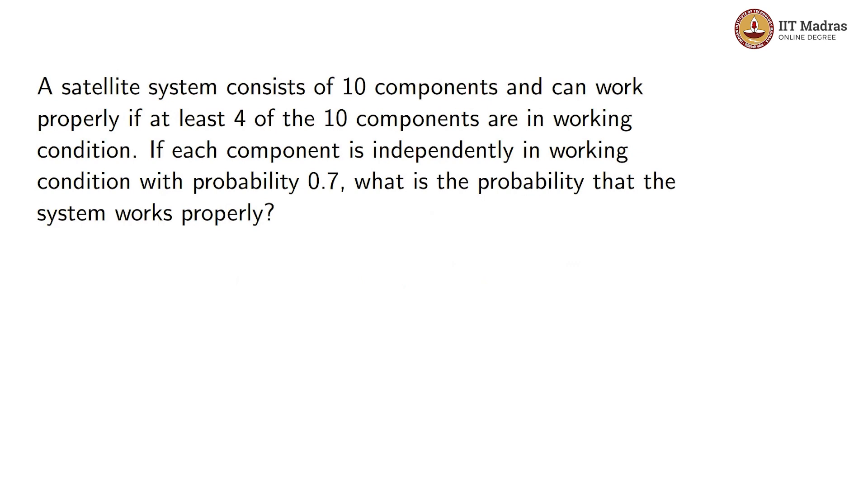A satellite system consists of 10 components and can work properly if at least 4 of the 10 components are in working condition. If each component is independently in working condition with probability 0.7, what is the probability that the system works properly?